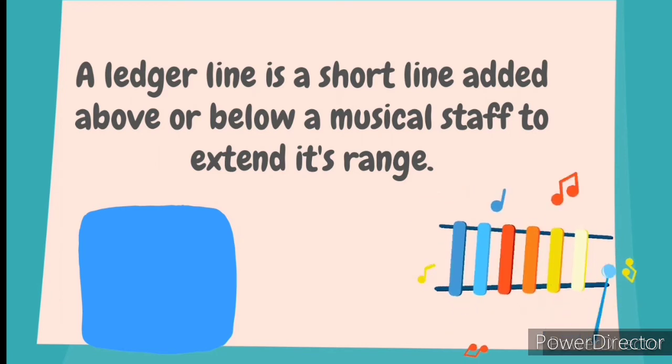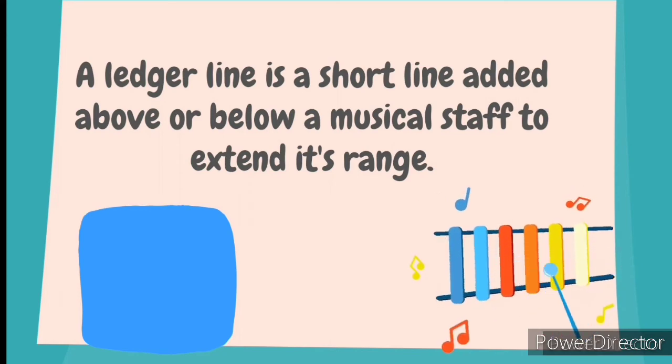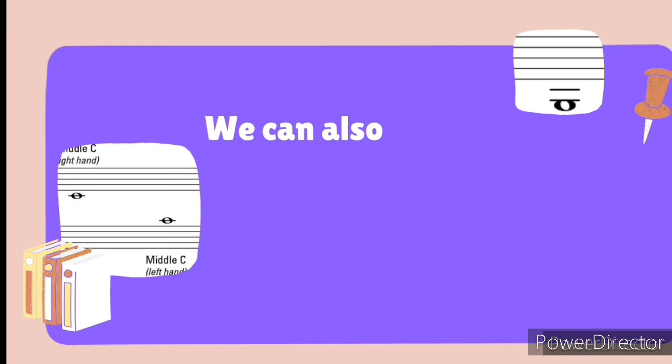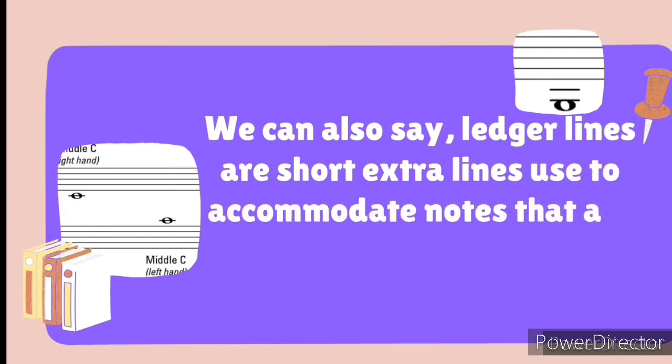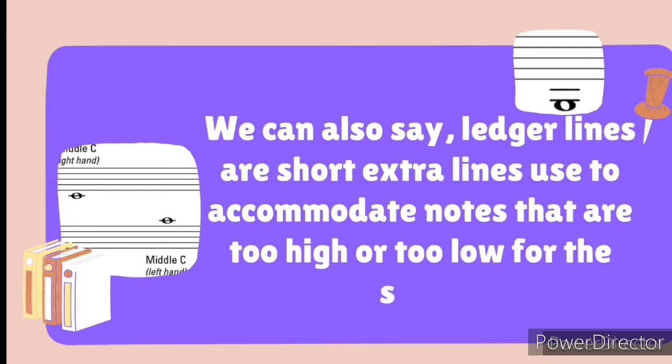If you find this difficult, we can also say that ledger lines are short extra lines which we use to accommodate notes that are too high or too low for the staff. We have five lines and four spaces which is a musical staff, but when we have some notes that are too high or too low to stay inside that staff, we have to add ledger lines.